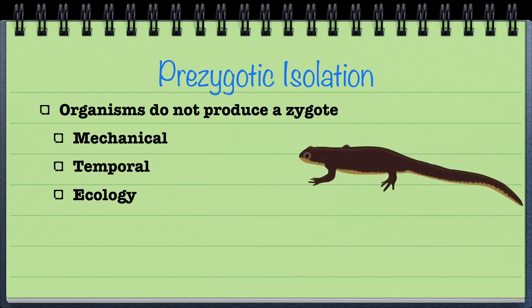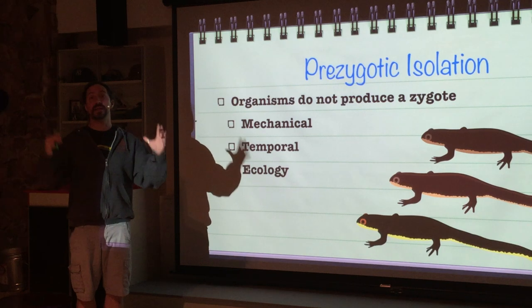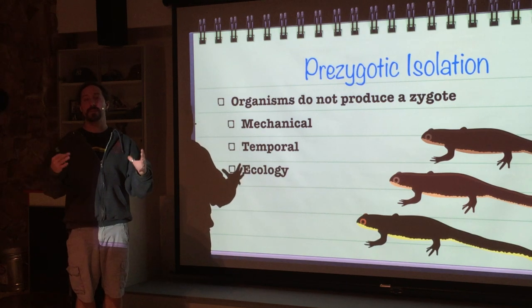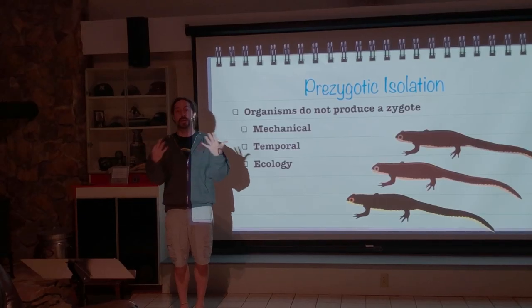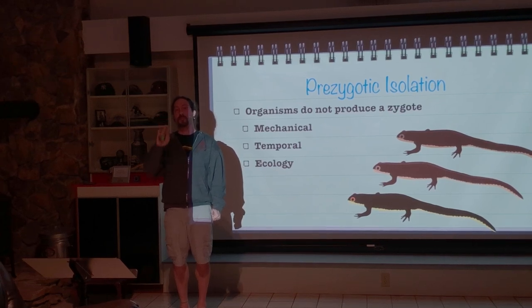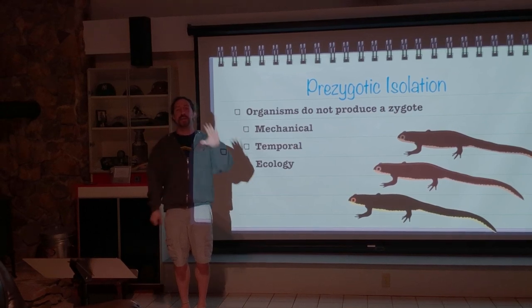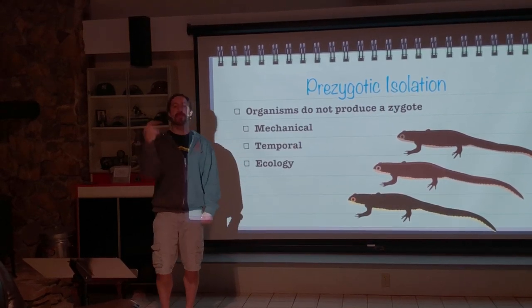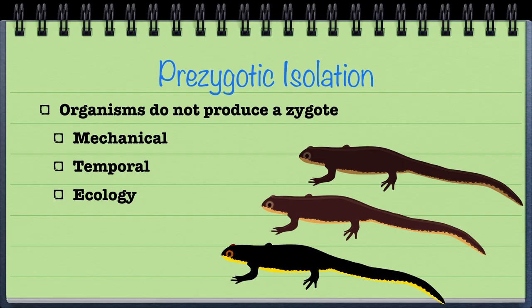The next type is called ecological reproductive isolation. Ecological reproductive isolation means that despite the fact that these organisms might occupy the exact same territory and their boundaries overlap, they won't breed because their preferred breeding locations don't overlap. Since their preferred breeding grounds don't overlap, they won't mate with each other — even though their territory overlaps, the specific area where they want to breed is different.